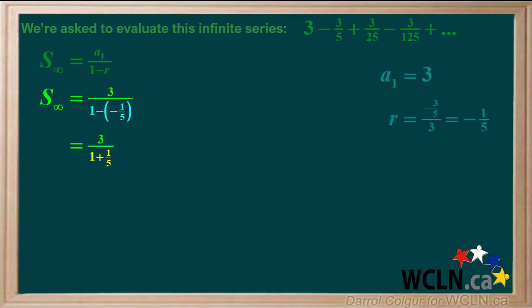1 minus negative 1 fifth is the same as 1 plus 1 fifth. 1 plus 1 fifth is the same as 6 fifths. And 3 over 6 fifths is the same as 3 times 5 sixths, which is 5 over 2.